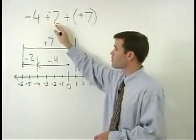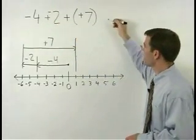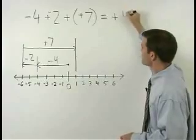So negative 4 plus negative 2 plus positive 7 is positive 1.